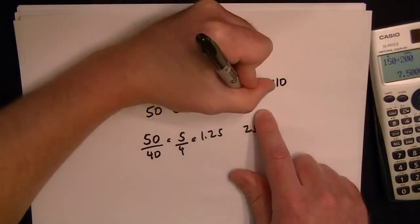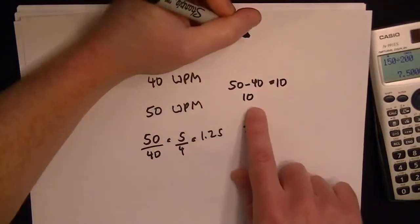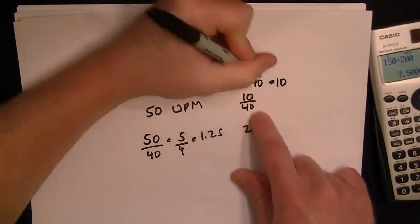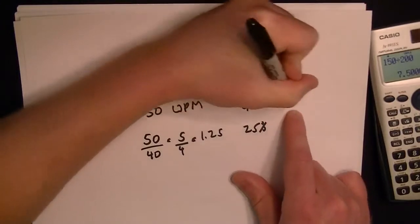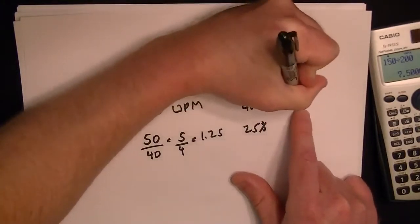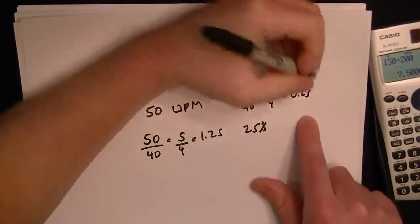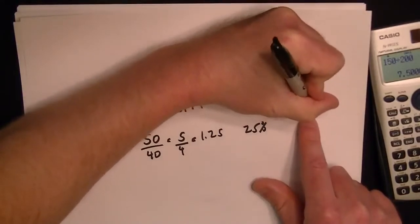And so what's 10 out of 40 is equal to 1/4, and that is going to give you 0.25, or in other words, 25%.